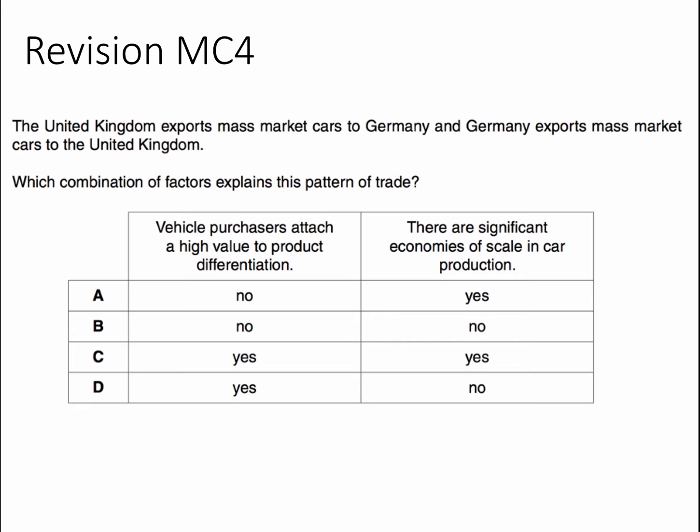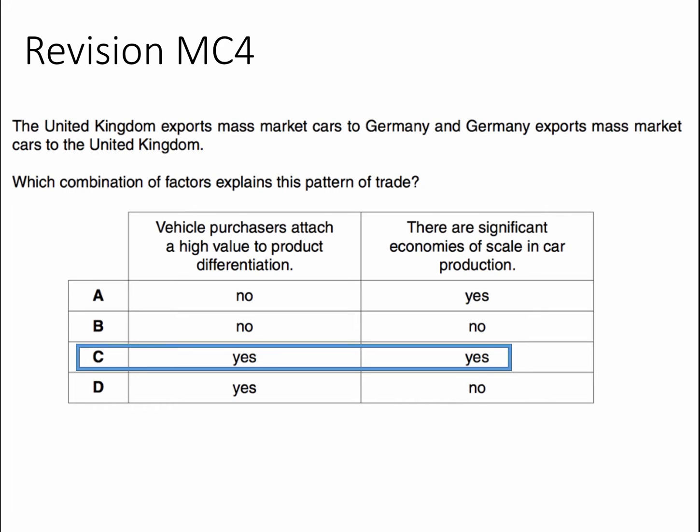The correct answer to this question is C. Consumers buying vehicles attach a high value to product differentiation — they like choice. And there are some significant economies of scale in car production. Let's work this one through.